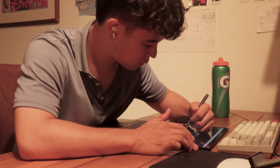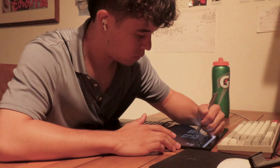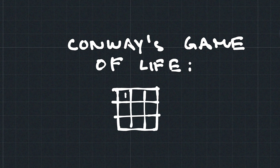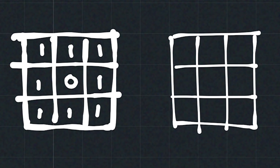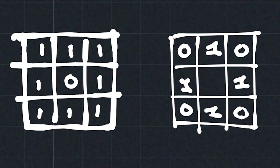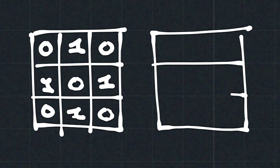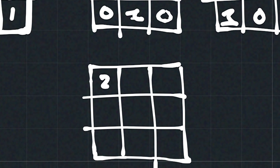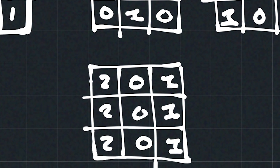A cellular automata basically consists of two things: a way of counting the neighbors of a cell, and a set of rules for determining what lives and dies. In Conway's Game of Life, each cell sees its eight neighbors including diagonals, and each counts for one. But we could imagine a scenario where a cell only sees its four direct neighbors, or where left side neighbors count for two and right side neighbors count for one. Each of these would yield completely different behaviors.